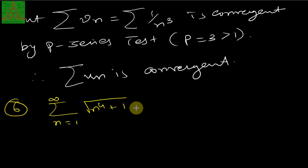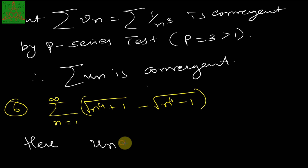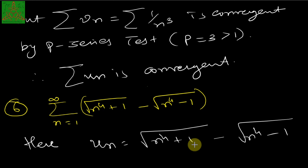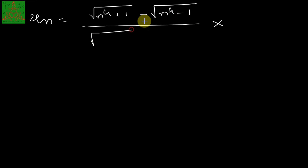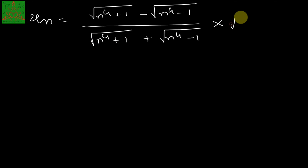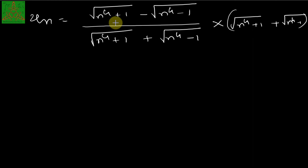The sixth example: test the convergence of summation of [√(n⁴ + 1) − √(n⁴ − 1)]. Here u_n = √(n⁴+1) − √(n⁴−1). To handle this difference of square roots, we multiply and divide by the conjugate √(n⁴+1) + √(n⁴−1), which converts the numerator via the identity (a−b)(a+b) = a²−b².